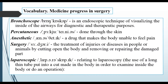And today we have new words. Vocabulary. Bronchoscope: an endoscopic technique of visualizing the inside of the airways for diagnostic and therapeutic purposes. Percutaneous: down through the skin. Anaesthetic: a drug that makes the body unable to feel pain. Surgery: the treatment of injuries or diseases in people or animals by cutting open the body and removing or repairing the damaged part. Laparoscopic: relating to laparoscopy — the use of a long thin instrument put into a cut made in the body in order to examine inside the body or do an operation.